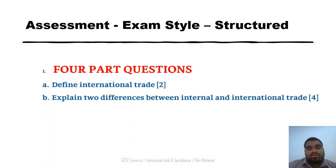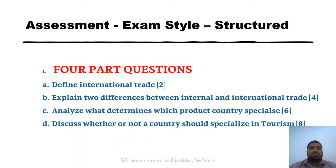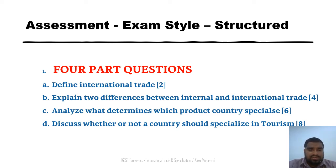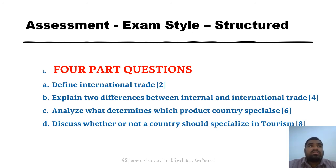Now a structured four-part question. Part A: define international trade — two marks. It is the exchange of goods and services between different countries. Part B: explain the difference between internal and international trade. International trade is the exchange of goods and services between countries; internal trade is the exchange of goods and services within a country. In international trade, different currencies are used, but in internal trade, one currency is normally used.